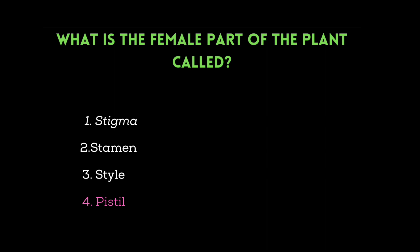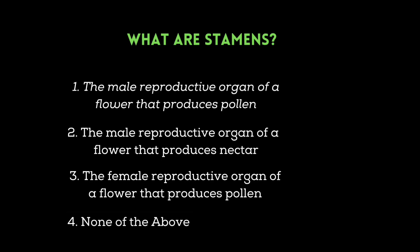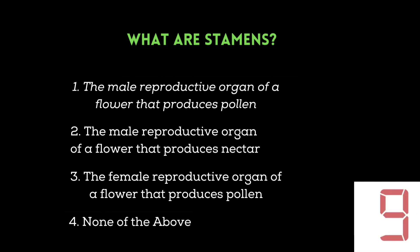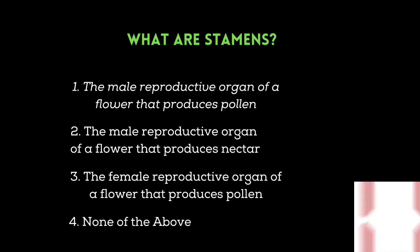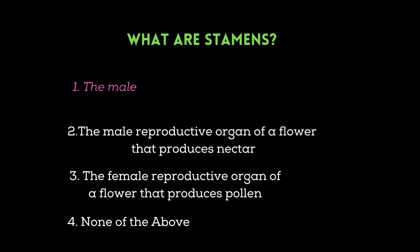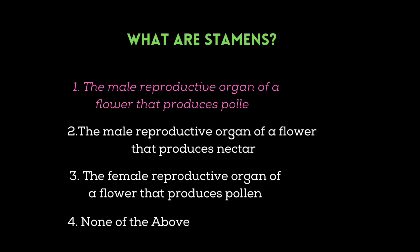The next question is: what are stamens? The male reproductive organ of a flower that produces pollen. The male reproductive organ of a flower that produces nectar. The female reproductive organ of a flower that produces pollen. None of the above. Your time starts now. The correct answer is number one: the male reproductive organ of a flower that produces pollen.